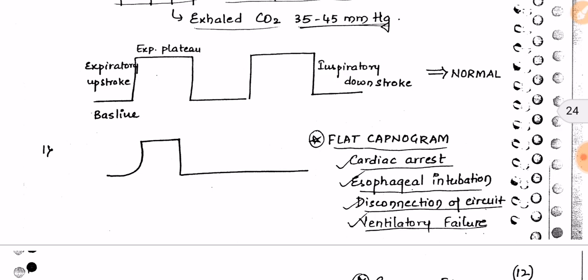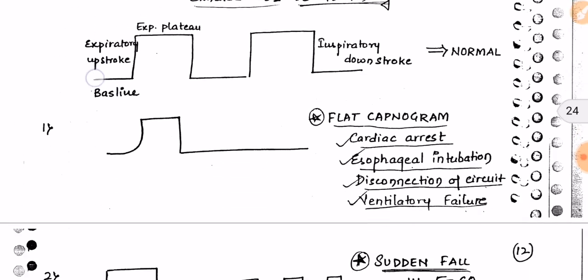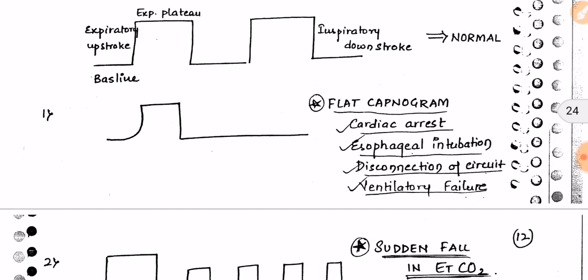A flat capnogram is also seen in esophageal intubation, which is common with inexperienced practitioners. If the esophagus is accidentally intubated, a flat capnogram appears, and we stop and re-perform the procedure. The four causes of a flat capnogram are: cardiac arrest, esophageal intubation, disconnection of circuit, and ventilatory failure.